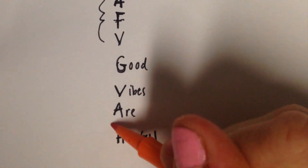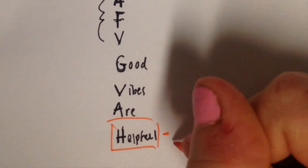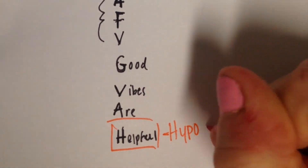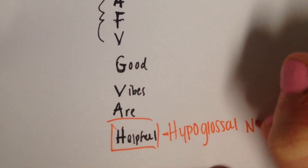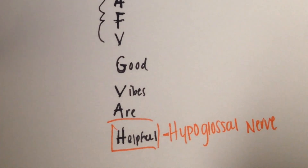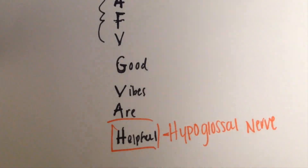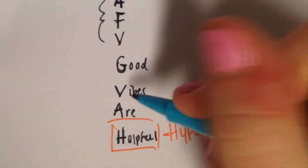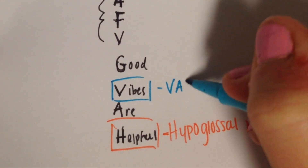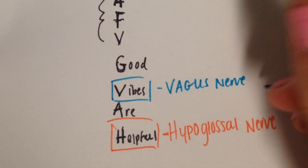What we're concerned with today is H — 'helpful' — for the hypoglossal nerve, which is cranial nerve 12, and our V — the vagus nerve — cranial nerve 10.